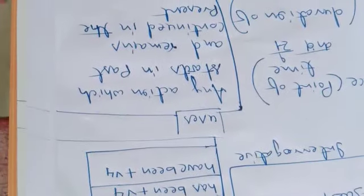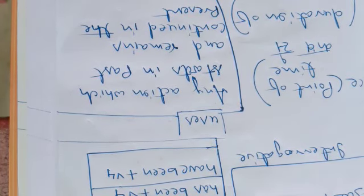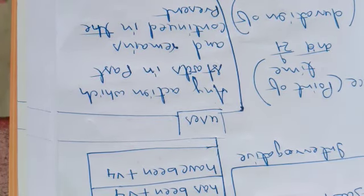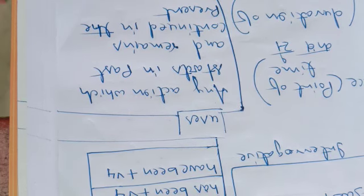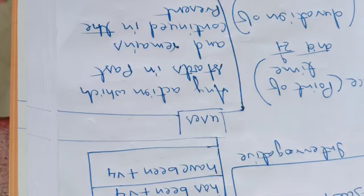Now coming to uses — where do we use present perfect continuous tense? Any action which starts in the past and remains continued in the present. For example, if I say 'kal sham se barish hoti rahi hai' — since yesterday evening it has been raining — the time 'yesterday evening' is past, but the action of raining is still continuing in the present.